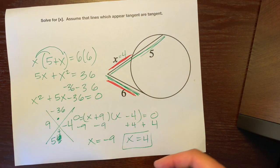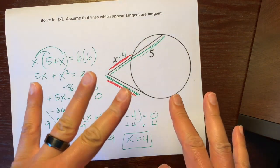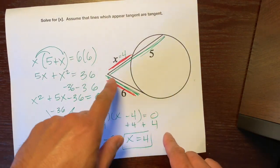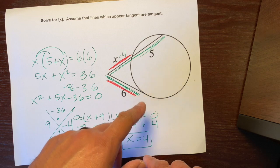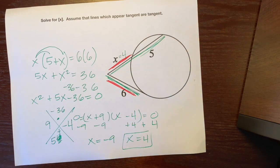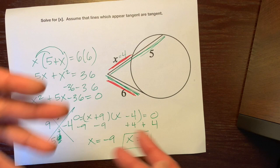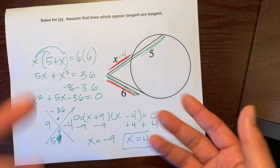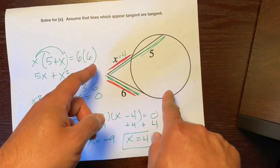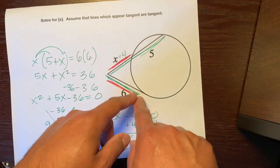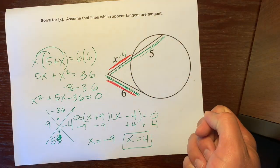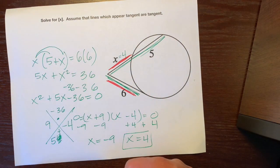There are three examples using the intersecting secants theorem. It even works when one of those lines isn't a secant — it's a tangent. So yeah, that's how it works. I hope that helps. Thanks.